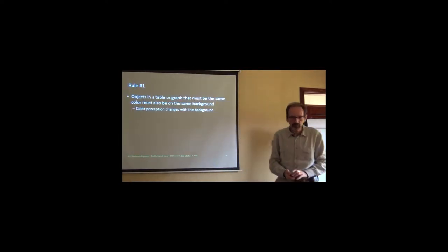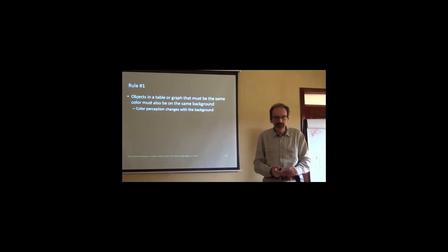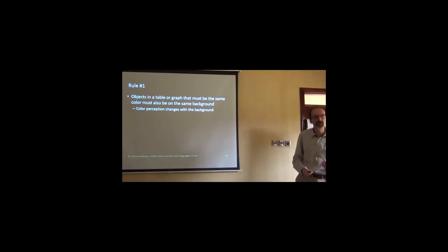Rule number one: Objects in a table or graph that must be the same color must also be on the same background, because color perception is relative. It depends very heavily on what is around the color or surrounding the color.